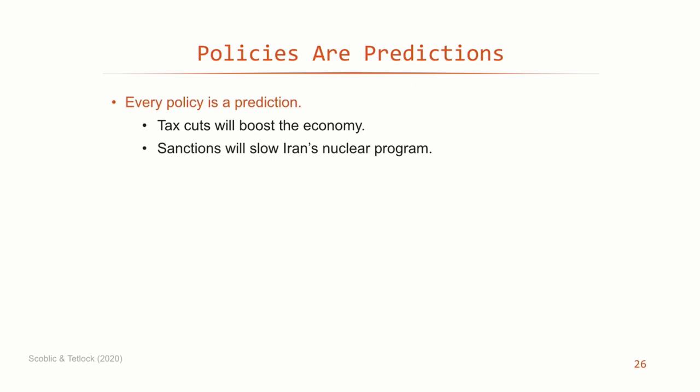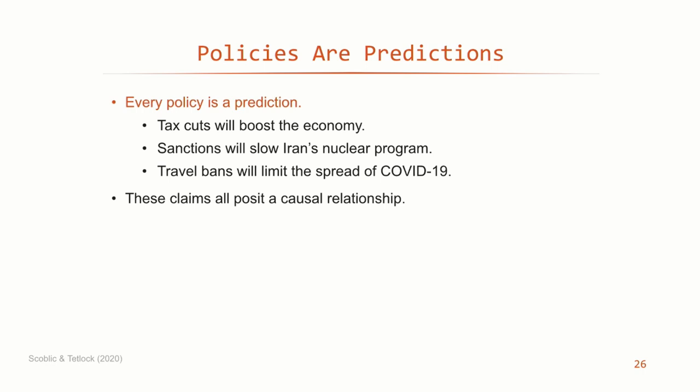What I'm going to be talking about is putting probabilistic forecasts on future events, much the way that a meteorologist will say there's a 60% chance of rain. And the question is, why do we do this? My abiding thesis is that all policies are predictions. When we make claims like 'tax cuts will boost the economy,' or 'sanctions will slow Iran's nuclear program,' or 'travel bans will slow the spread of COVID-19,' each of those things is positing a causal relationship that we're not actually sure about. So putting probabilistic predictions on whether those things will happen is a way of saying we're not certain — it's a way of expressing the degree of confidence.